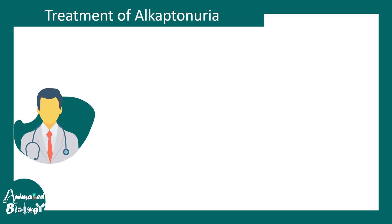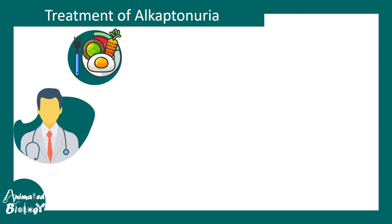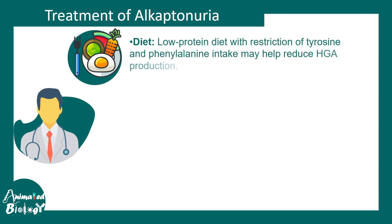When it comes to treatment of alkaptonuria, you cannot really cure this disease because it's a genetic disorder, but it can be managed. The diet could be modified — if the diet has low protein, especially proteins that don't contain much tyrosine or phenylalanine, it won't be broken down into homogentisic acid. Since the tyrosine and phenylalanine metabolism pathway leads to HGA production, reducing those elements in the diet leads to less of these metabolic intermediates.